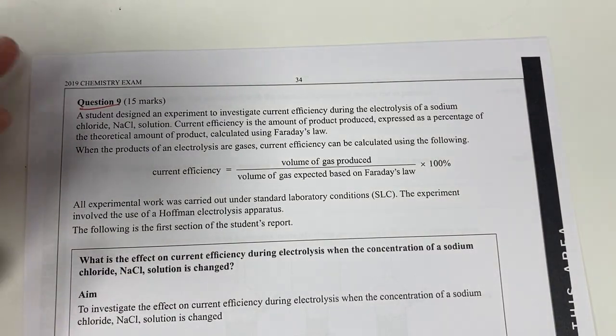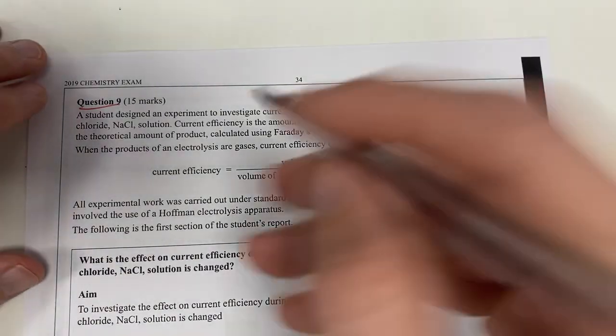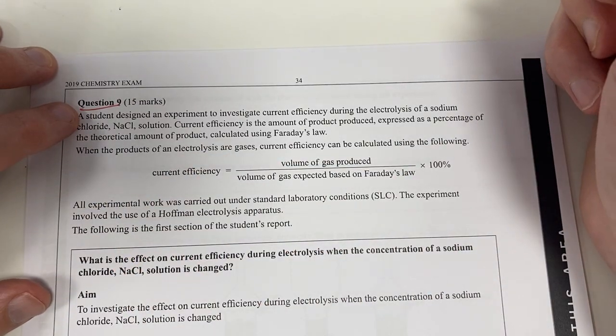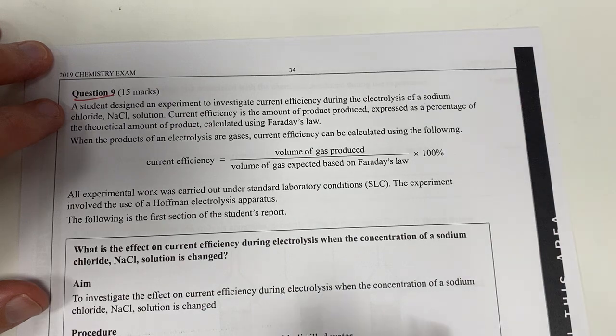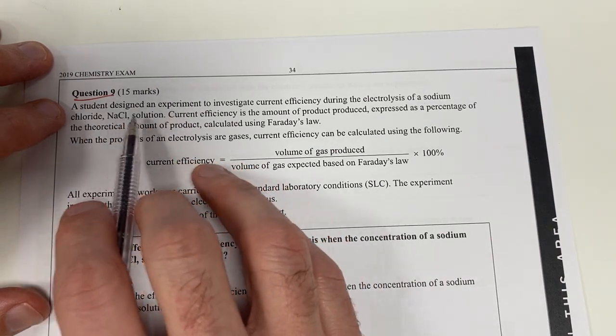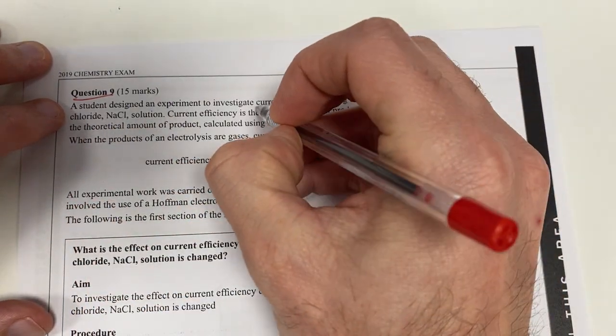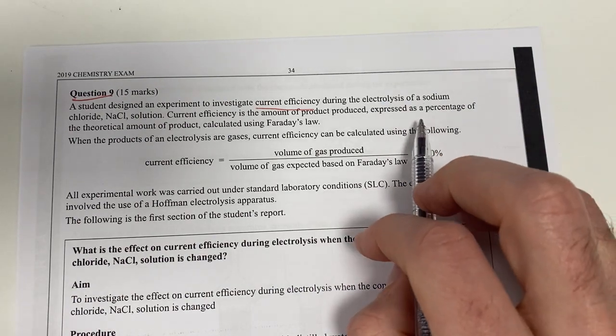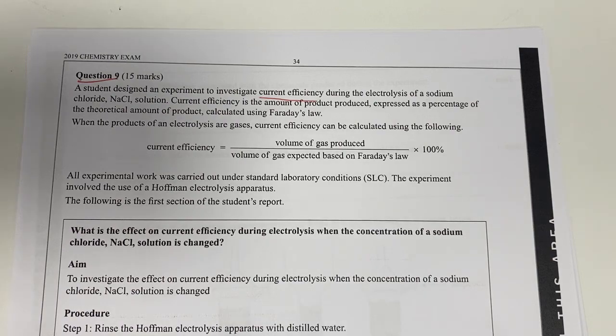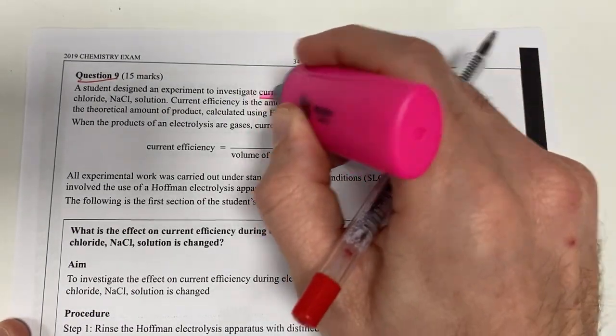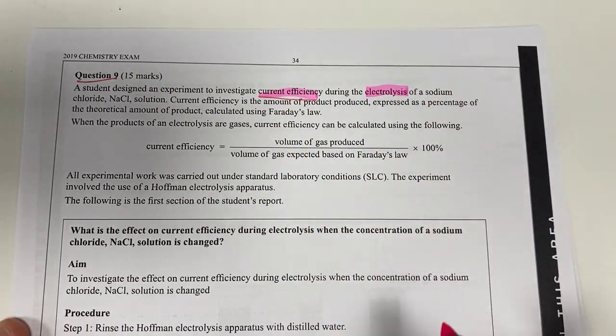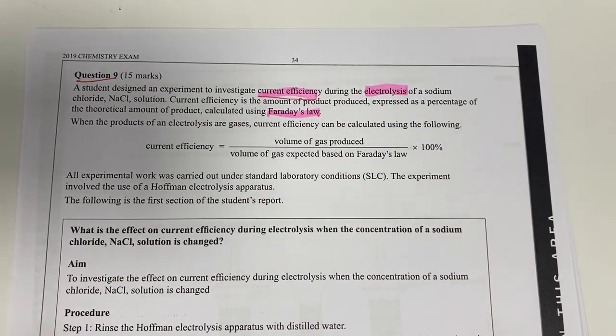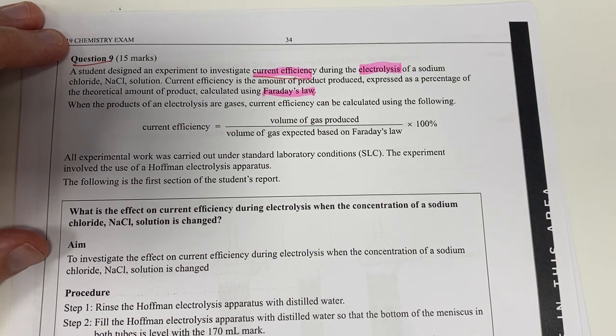So here we are at question 9 of our VCE exam for 2019. Question 9 is notorious for being an experimental investigation, so let's have a read of what it is all about. And this is no different. A student designed an experiment to investigate current efficiency of an electrolysis cell of sodium chloride.